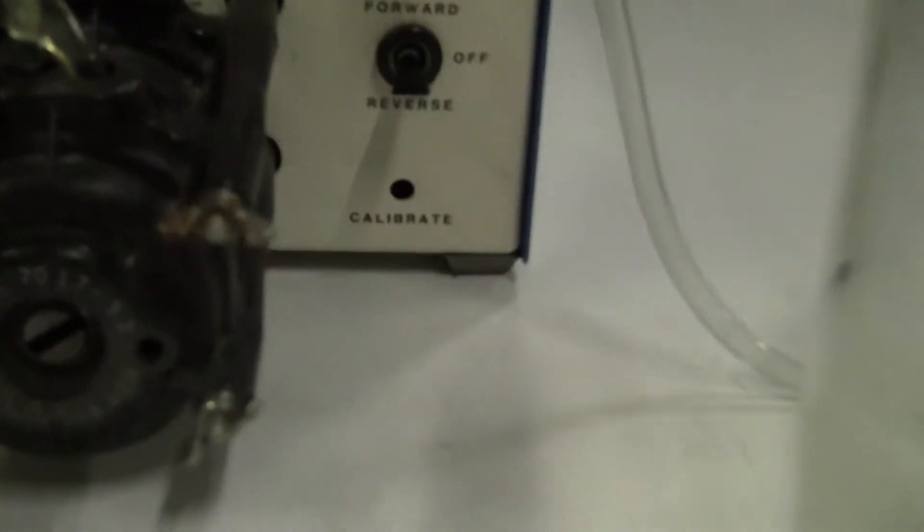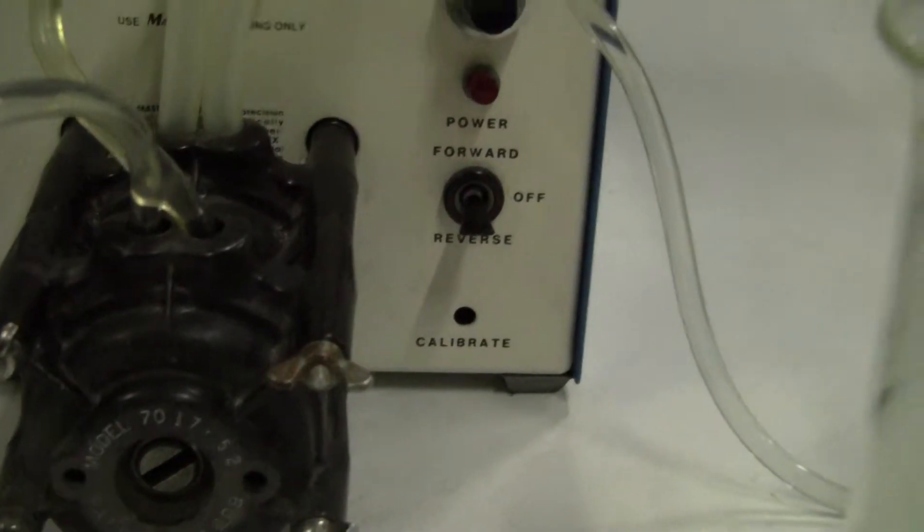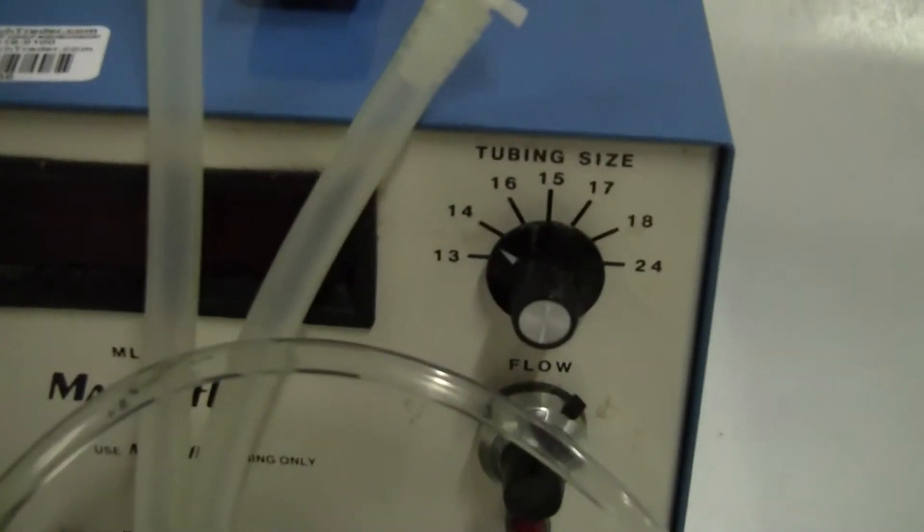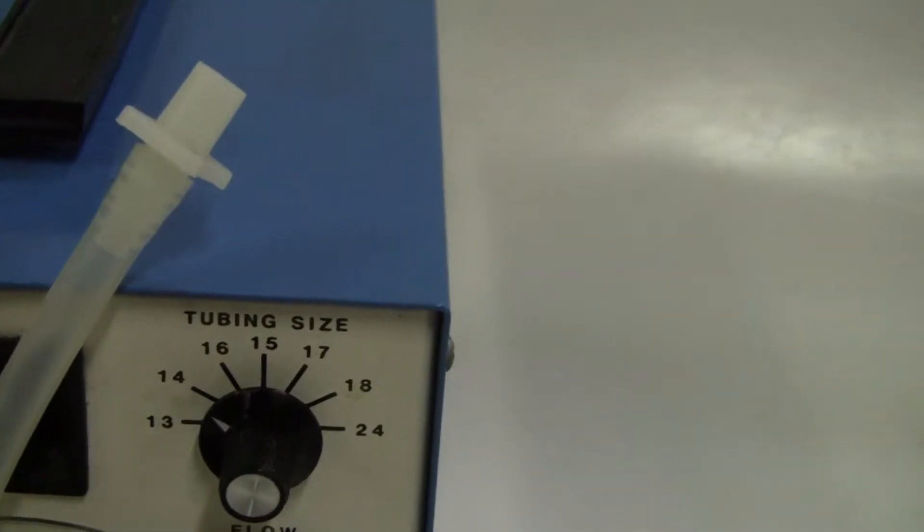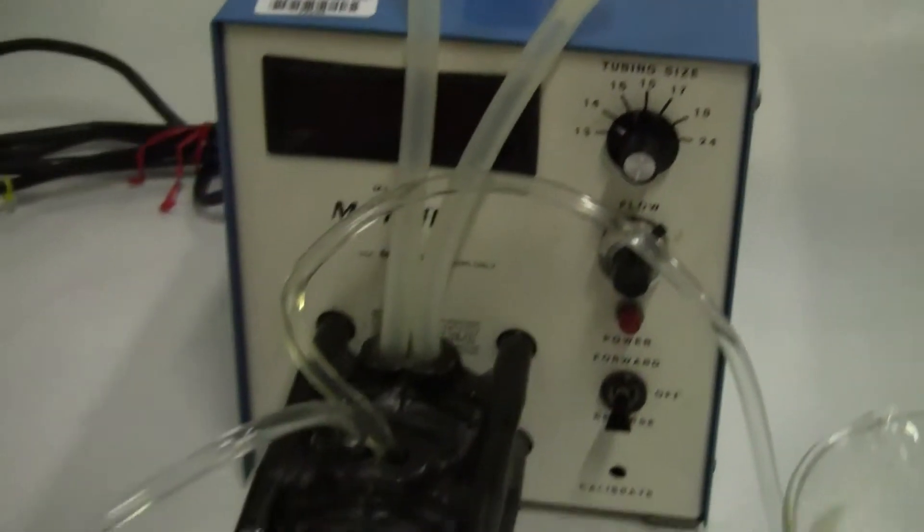It's currently fixed with two heads, Model 7017-52. It can accept many different tubing sizes. You can see it changes and it will change the different flow rates. It has a digital output for the flow rates. Let's turn it on and take a look.